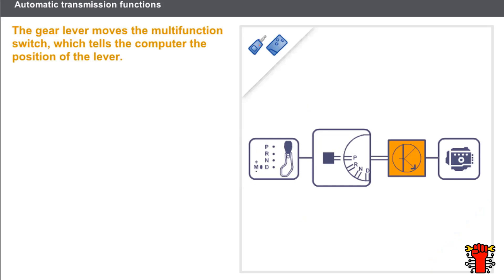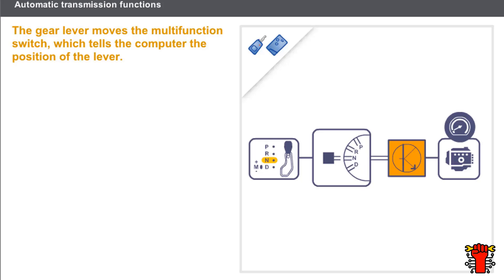The gear lever moves an electric switch — the multifunction switch — which tells the computer the position of the lever. Depending on the position of the lever, the computer may accept or reject the driver's request. For example, the computer cannot authorise starting unless it receives the Park or Neutral position signal.